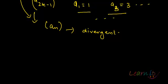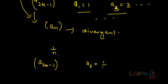Similarly, we can have the sequence 1 by n. In 1 by n, I can take the subsequence of odd indices, 2k minus 1, giving a_3 equals 1 by 3, a_5 equals 1 by 5 and so on — this is a subsequence of 1 by n. Similarly you can take a_2k, giving 1 by 2, 1 by 4 and so on. So this is what we mean by a subsequence.